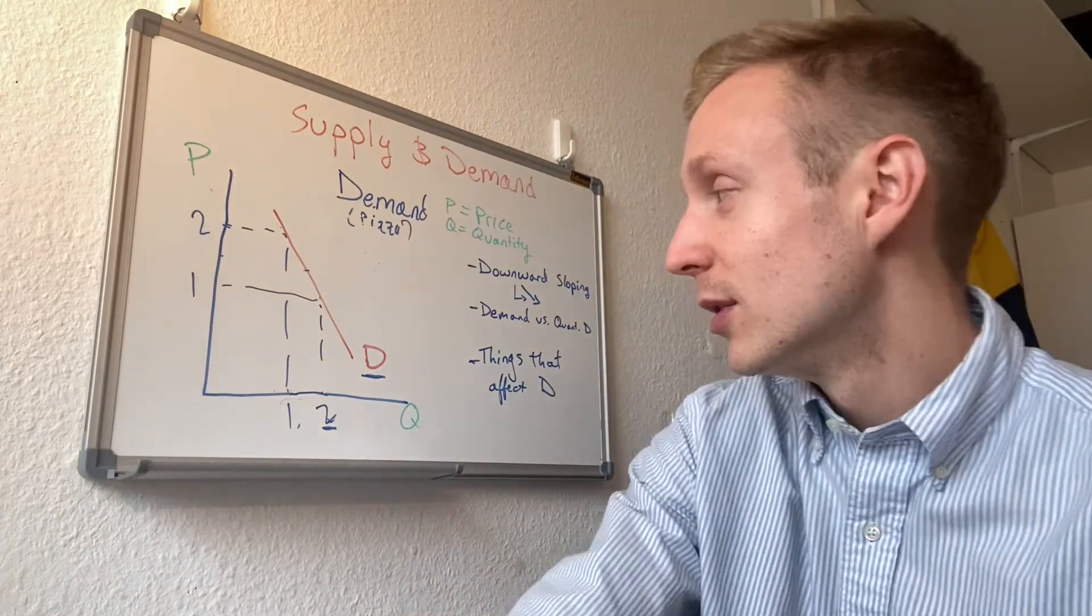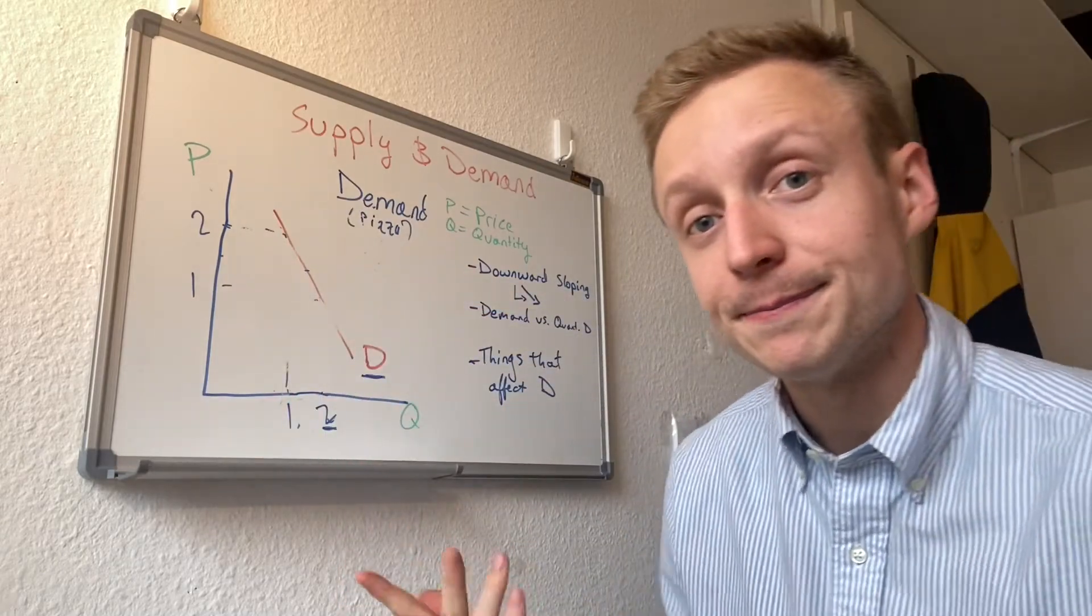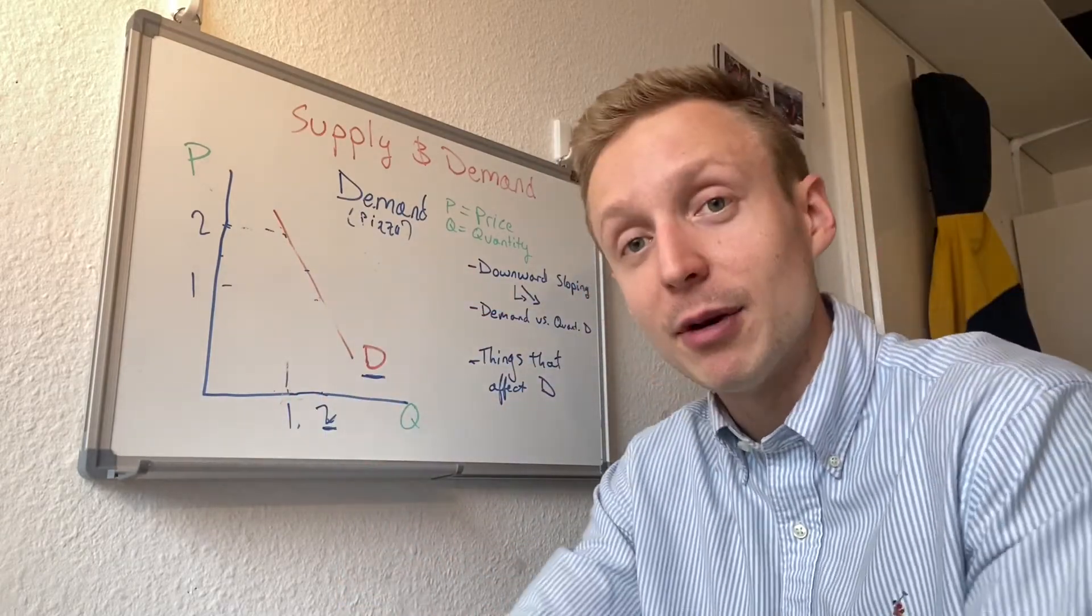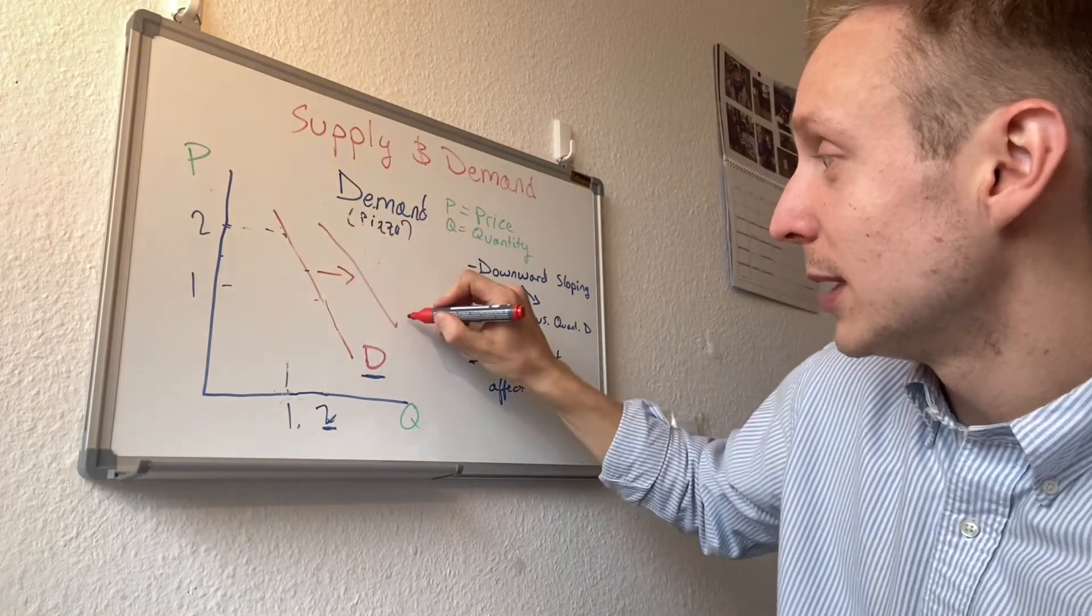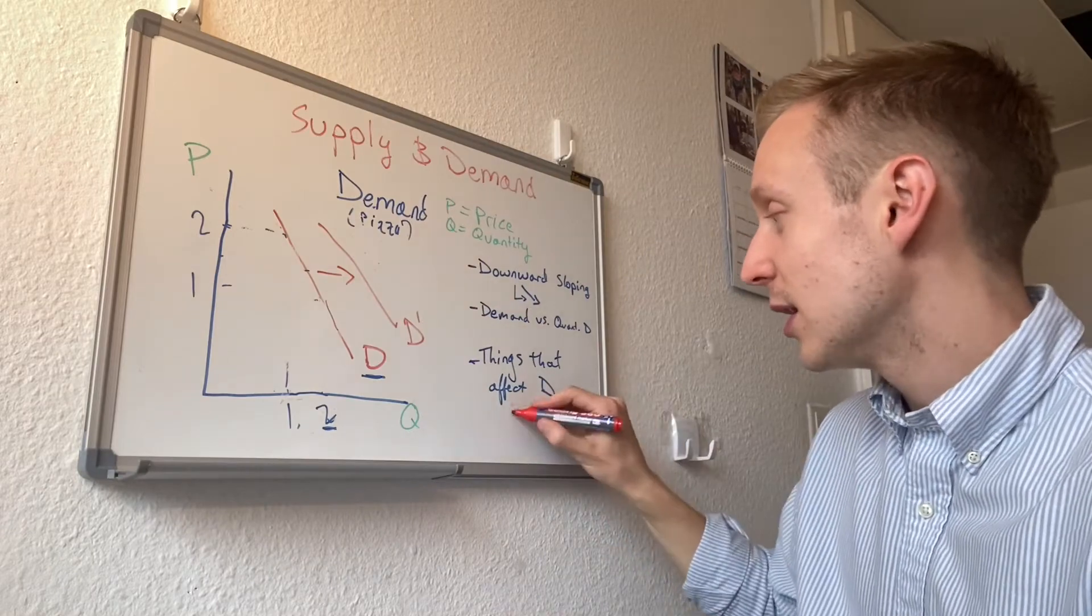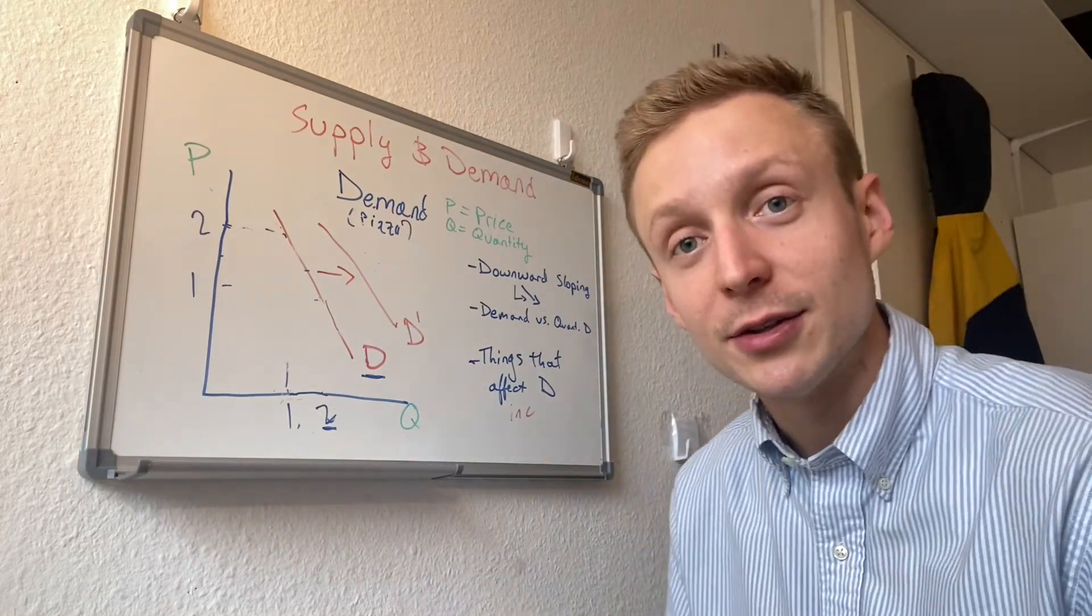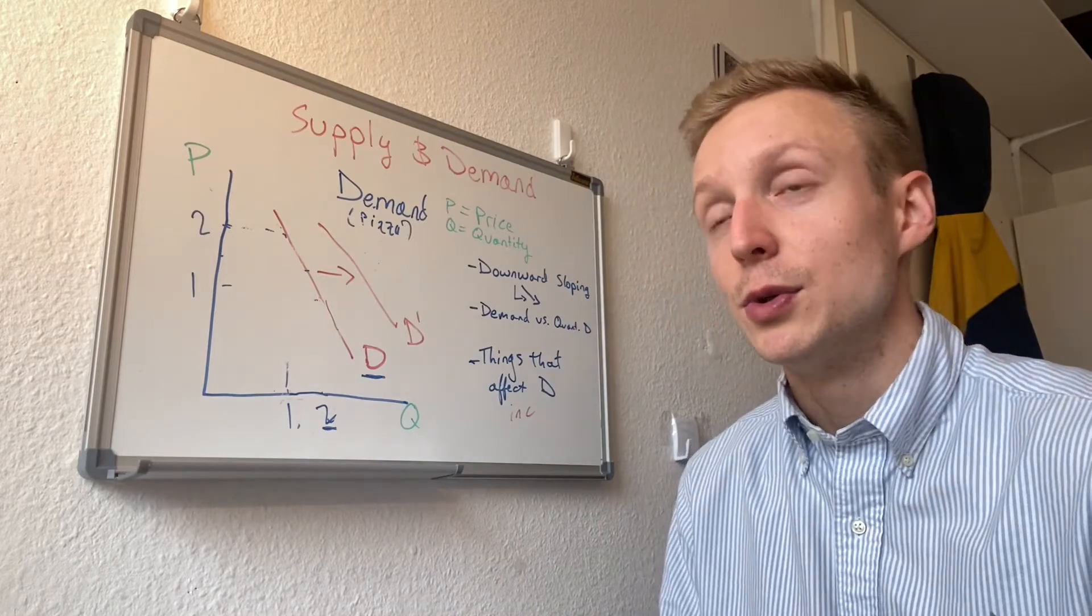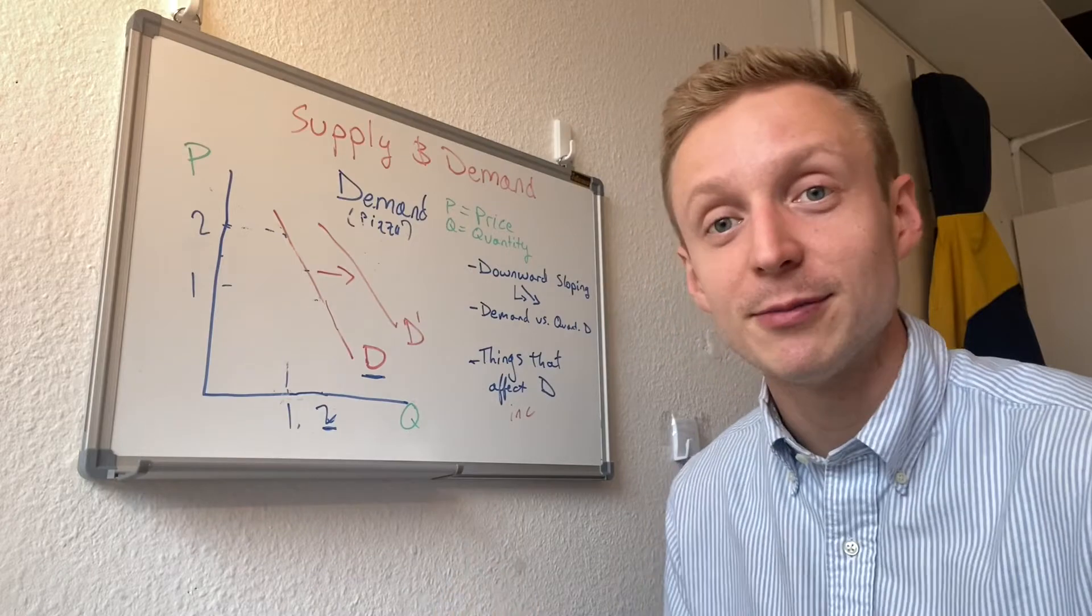And some things affect demand. Well, what things would affect demand? Maybe income, right? If the income of the population goes up, the demand for pizza goes up. People have more money, right? This is new demand. What else? So income, price of related goods. Right, if doner kebab, an alternative to pizza, becomes more expensive, maybe pizza will become more demanded. Right, so demand would shift again.